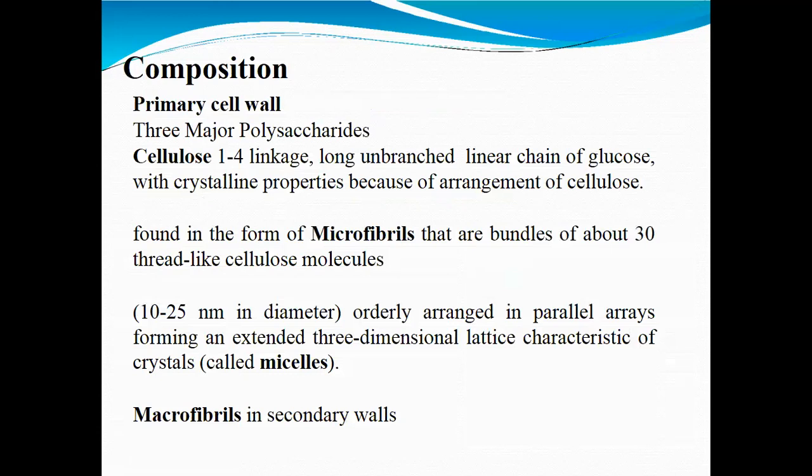The primary cell wall has three major polysaccharides. The first is cellulose, which is a 1-to-4 linkage, long, unbranched, linear chain of glucose with splint properties due to a specific arrangement of cellulose molecules. Cellulose is also found in the form of microfibrils — bundles of about 30 thread-like cellulose molecules, 10 to 25 nanometers in diameter, orderly arranged in parallel arrays, forming an extended three-dimensional lattice characteristic of crystals known as micelles. Microfibrils are also present in secondary cell walls.